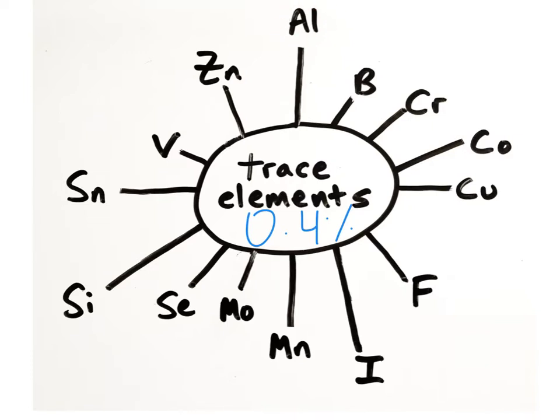The trace elements found in the body include aluminum AL, boron capital B, chromium CR, cobalt CO, copper CU, fluorine capital F, iodine capital I, manganese MN, molybdenum MO, selenium SE, silicon SI, tin SN, vanadium capital V, and zinc ZN.